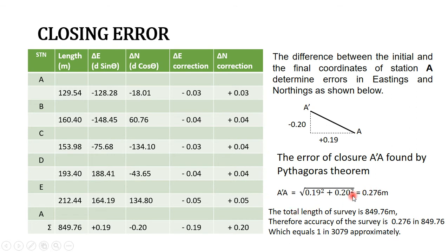That is our error in the perimeter of this traversy. The total length of the traversy was worked out to be 849.76 meters. So it means that we have an error of 0.276 meters in every 849.76 meters. We can express this as a ratio: 0.276 in 849.76, which simplifies to approximately 1 in every 3079.